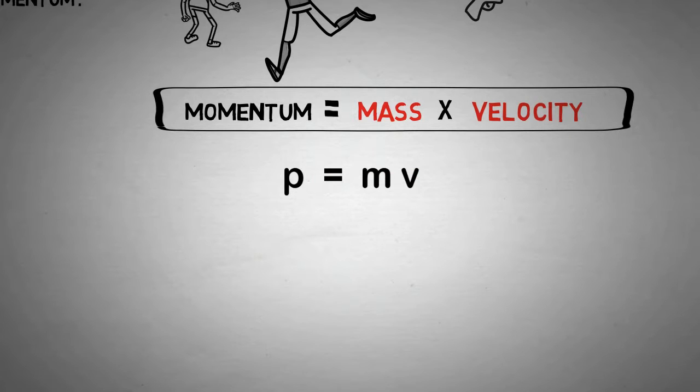This equation shows us that if an object is not moving, it has zero momentum. That's because its velocity will be zero, and we know that anything multiplied by zero is zero.